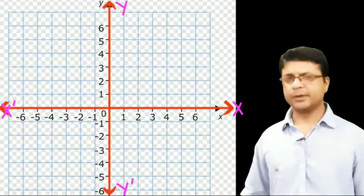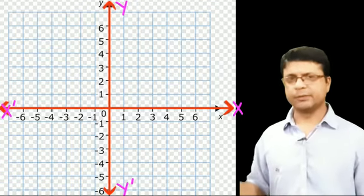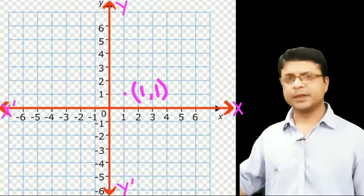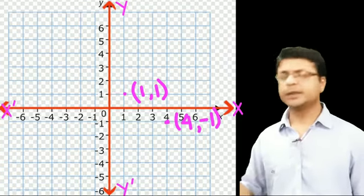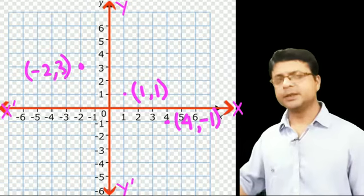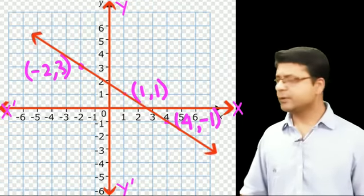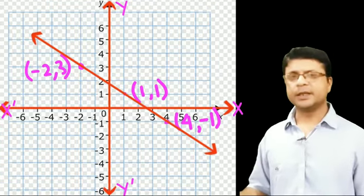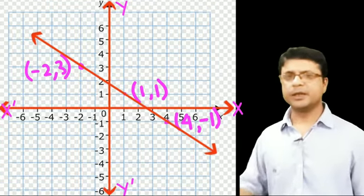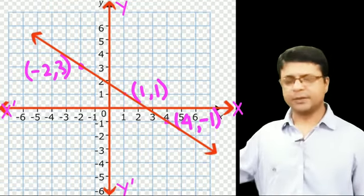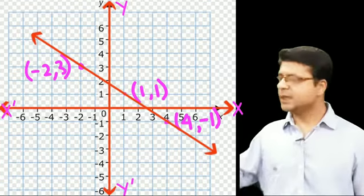Now let us draw the graph. We draw the x-axis and y-axis perpendicular to each other with numbers plotted on both. We plot the points (1, 1), (4, −1), and (−2, 3), then join them. We get a straight line. Place arrow signs on both ends to indicate the line extends infinitely in both directions, confirming infinitely many solutions. The straight line confirms this is a linear equation.